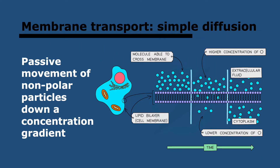Things can go across the membrane. First, we have simple diffusion, which is the spreading out that happens naturally because particles are in continuous random motion. More particles move from a higher concentration to a lower concentration — that's called movement down the concentration gradient — and it's important to understand that this is a passive process. No energy is required.